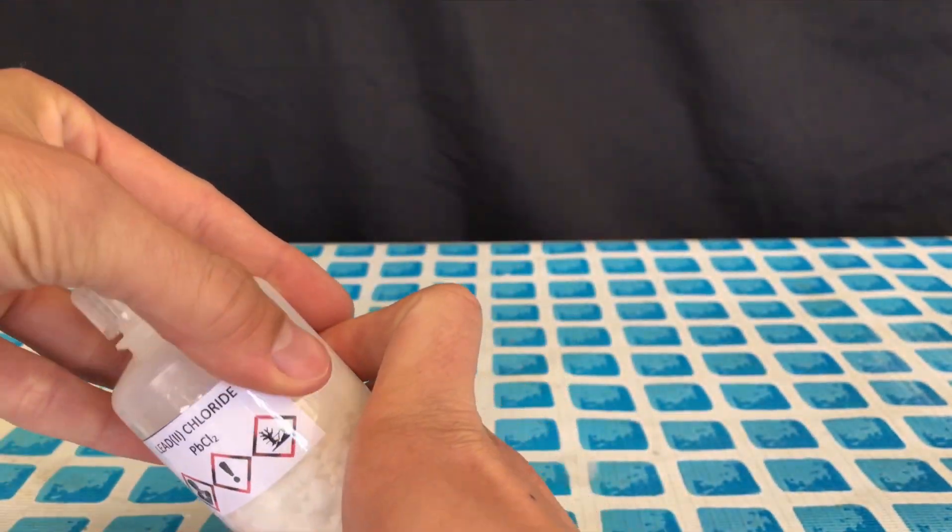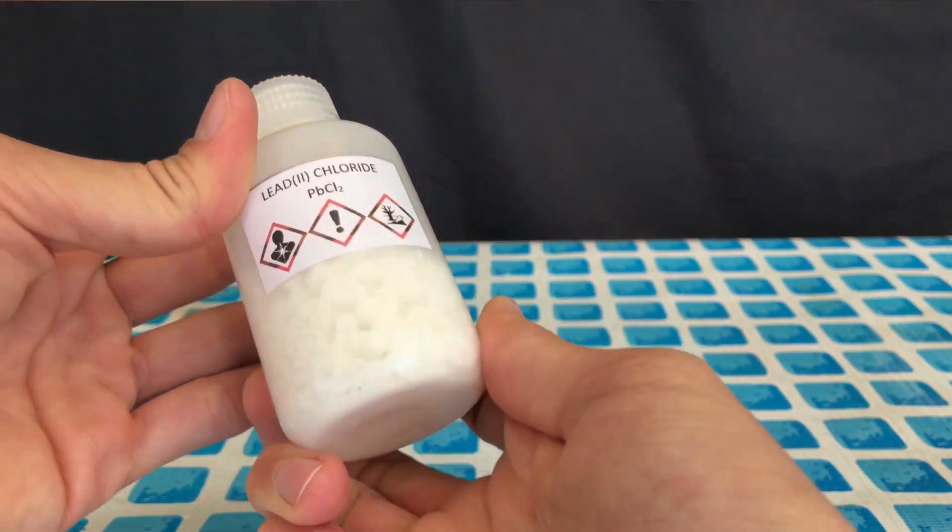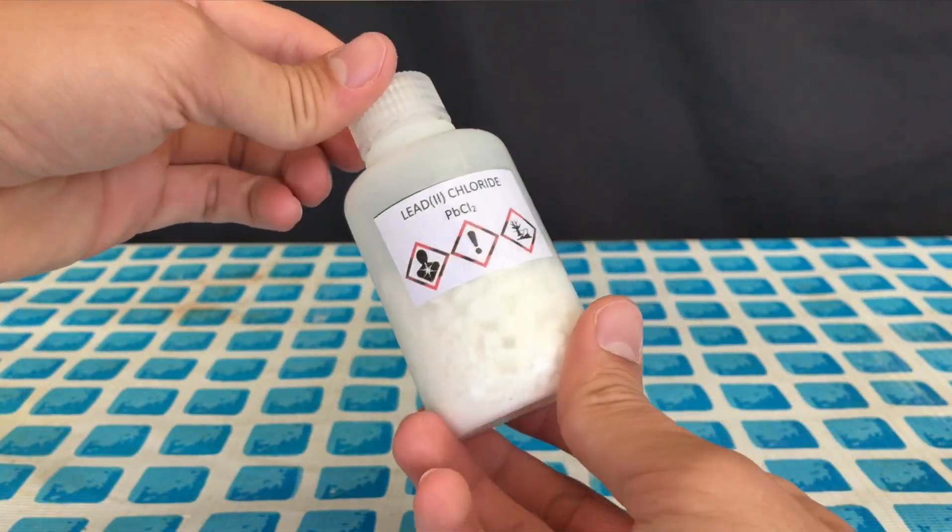And there you go, here's how you make lead(II) chloride from water soluble lead acetate waste. And that's how you make lead(II) chloride.